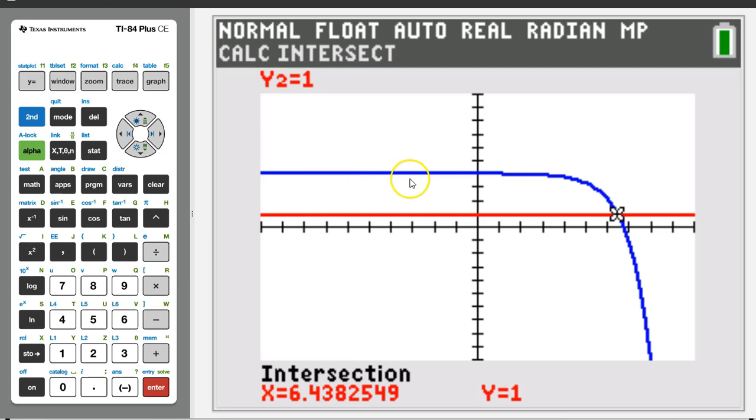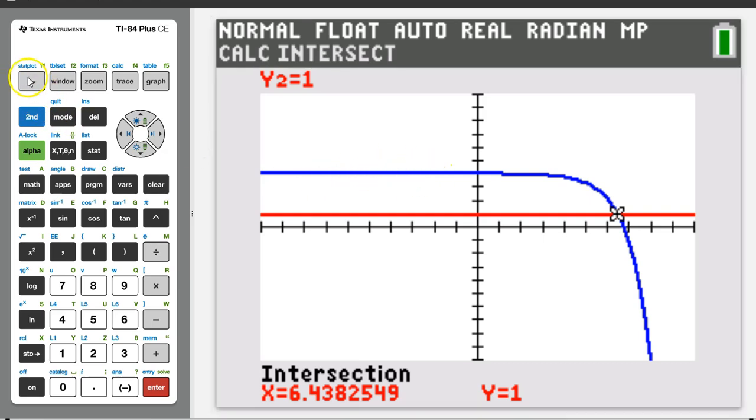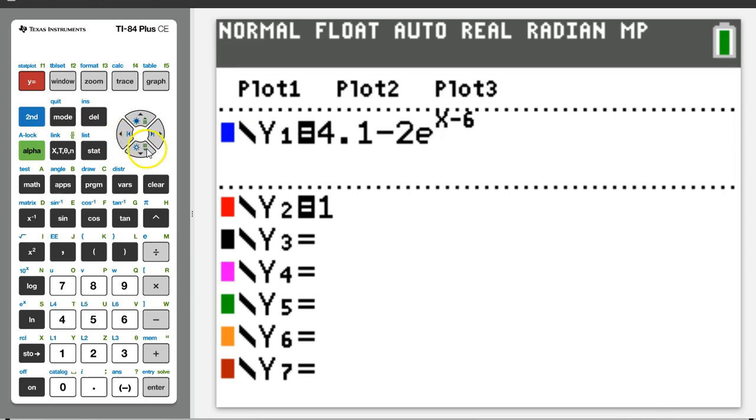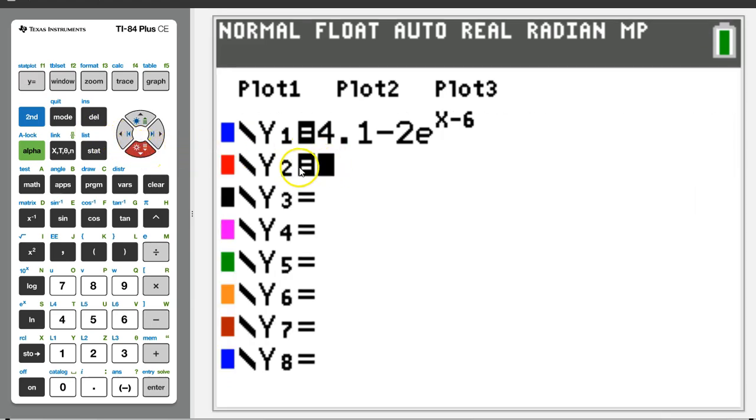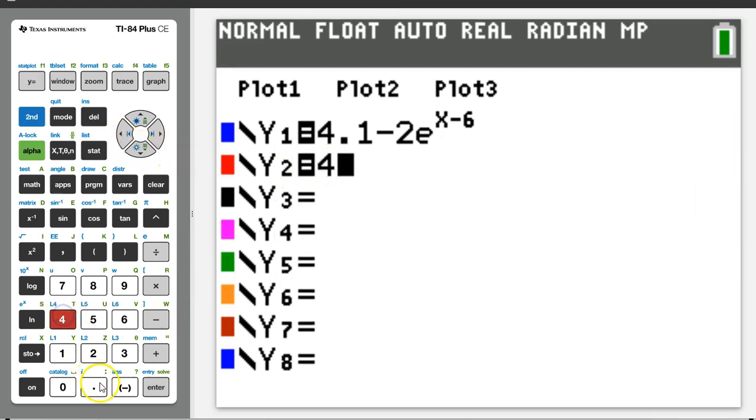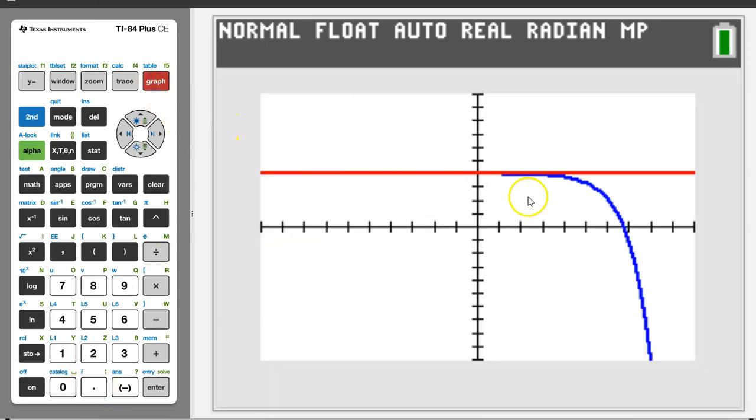Just for fun, let's confirm this by looking at the graph. In fact, let's go back to y equals and let's make y2 y equals 4.1 and hit graph. So yes, we can see that g of x seems to approach and level out at 4.1. That's why it disappears into the line y equals 4.1 on the left.